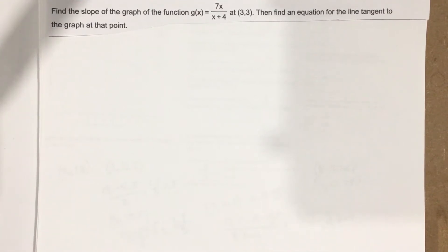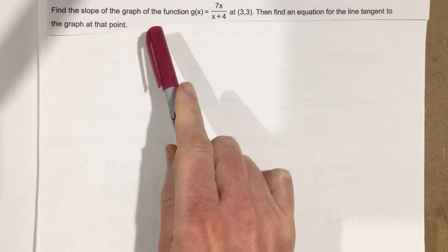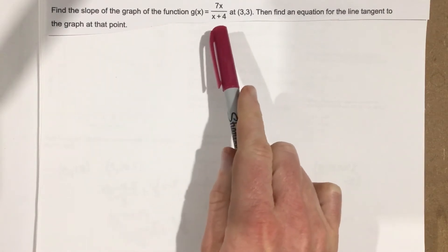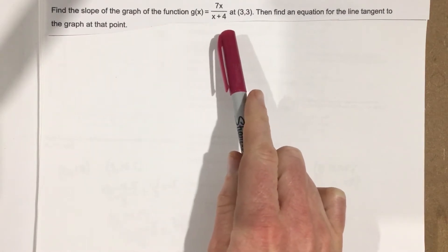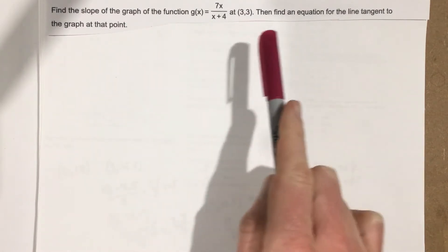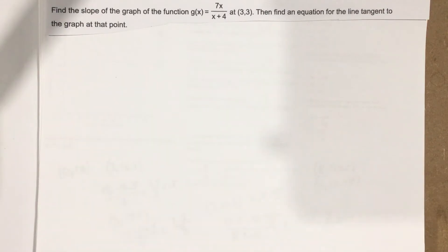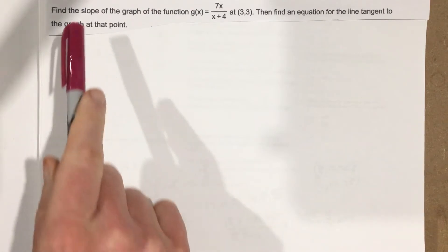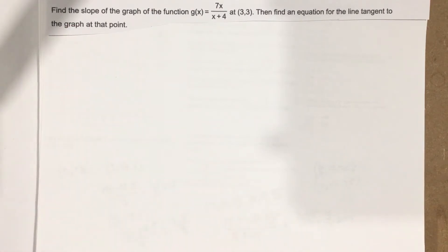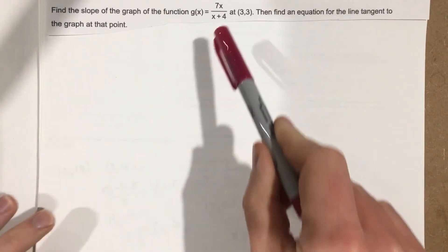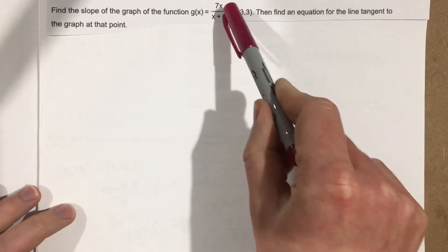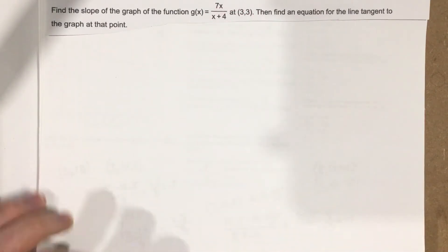This is problem number four for section 3.1. In this problem, find the slope of the graph of the function g of x equals 7x over x plus 4 at the point 3 comma 3. Then find an equation for the line tangent to the graph at that point. So we want to find the slope first, then write the equation for the tangent line that touches this function at 3 comma 3.